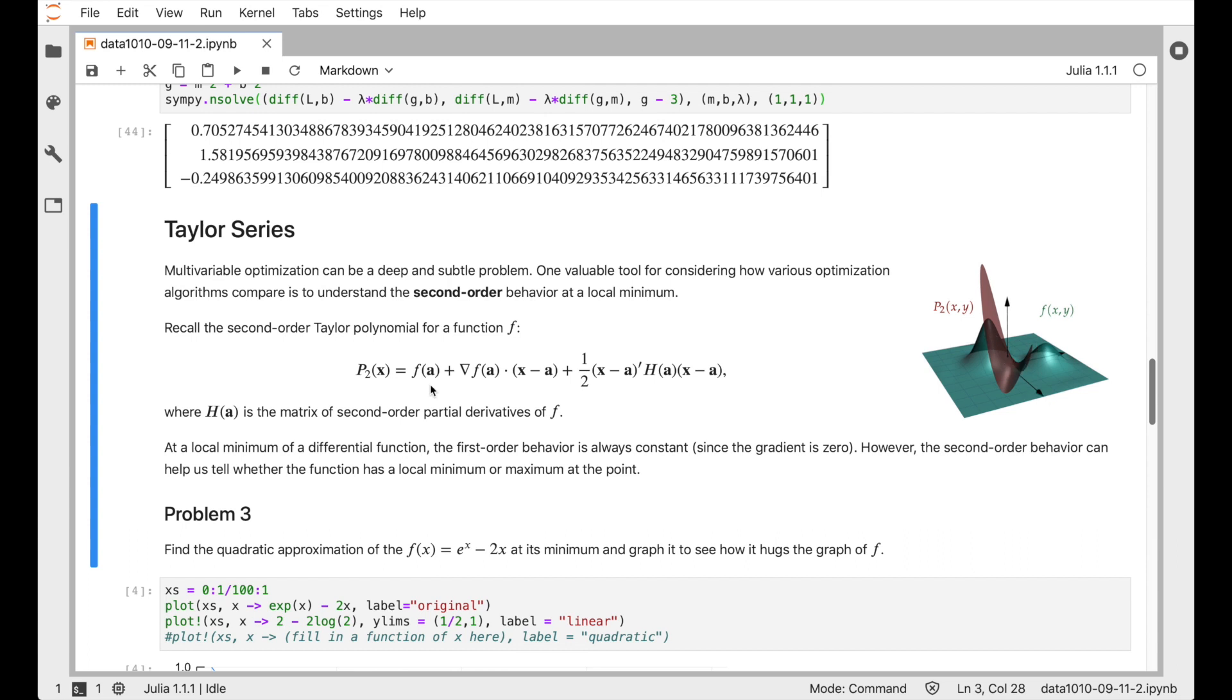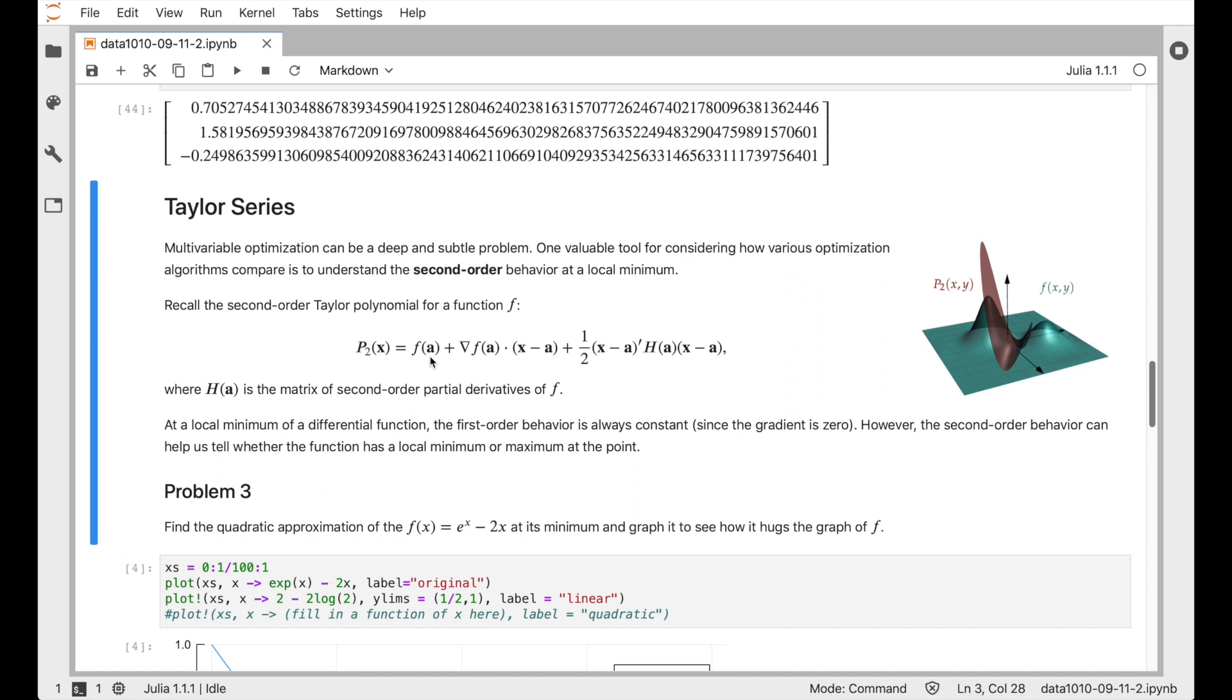So the second order Taylor polynomial of a function around a base point a starts at the value of the function at a. So that's kind of setting the initial value correctly. And then as you move away from a a little bit, so that's represented by x minus a, that's the vector indicating how far you've moved away from a and in which direction. If you dot that displacement vector with the gradient of the function at that base point, then that gives you the linear behavior of the function. And then if you take that displacement vector x minus a and multiply it on the left and on the right by what's called the Hessian, the matrix of second derivatives, then that gives you the quadratic behavior of the function.